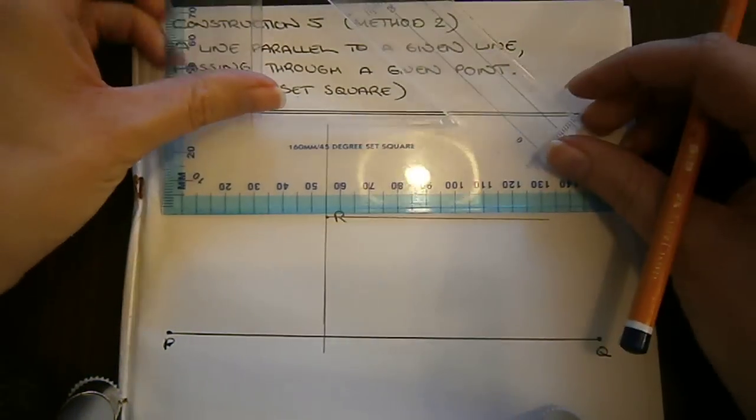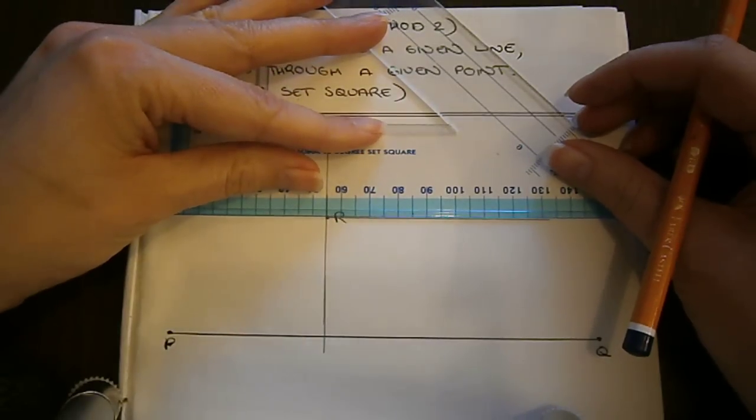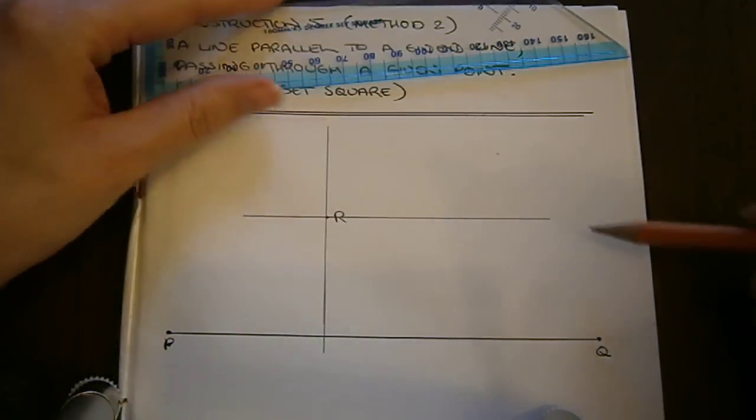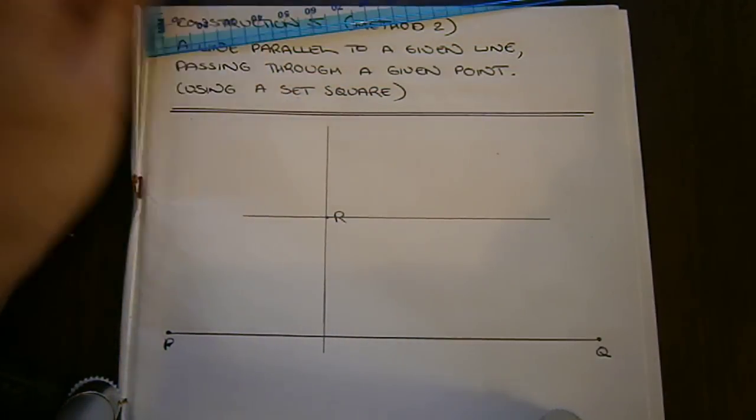Drawing our new line now through R, that is now parallel to our line PQ. Here we go.